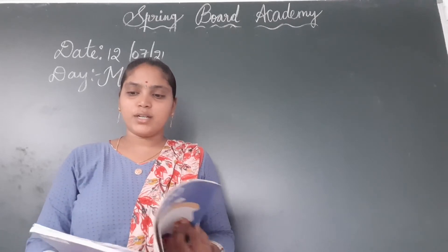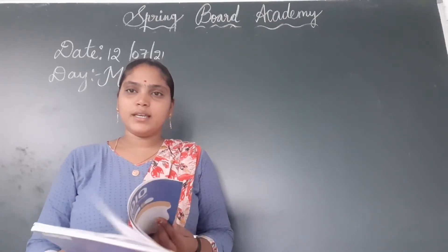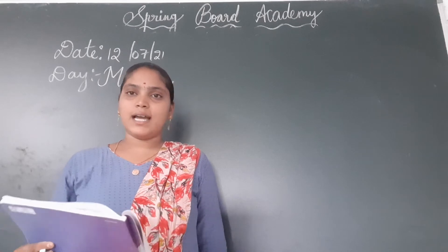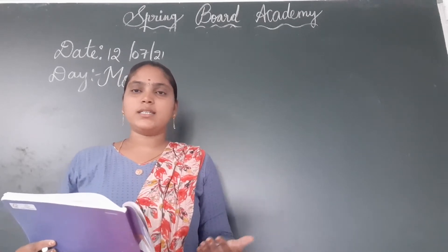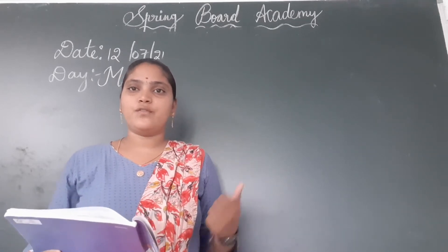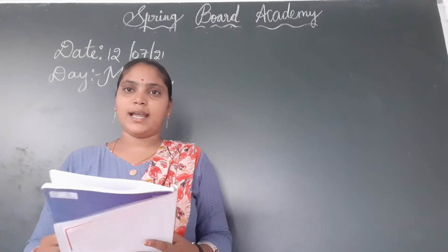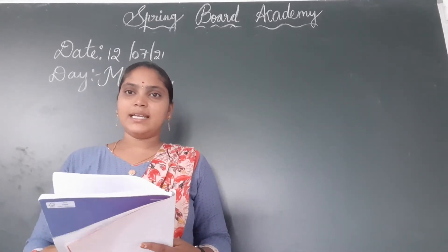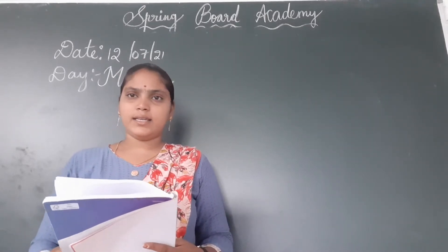First of all, what is the title of our chapter? It is Lines and Shapes. In lines and shapes, first we learnt the types of lines. Horizontal line, vertical line, and slanting line.